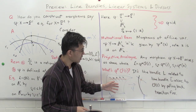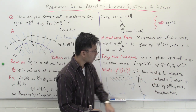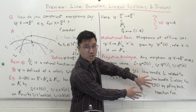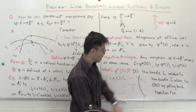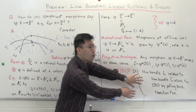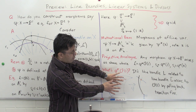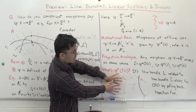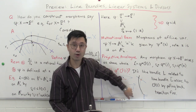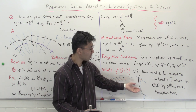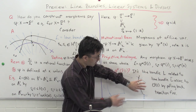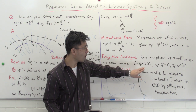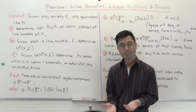For a more formal description: O(1) is given by two open patches with a transition function telling you how to glue two trivial bundles together. Pulling back gives an open cover of X by pulling back those open sets. On those two open sets the bundle is trivial, and the transition function — which is an invertible function on the intersection of the open sets in P1 — pulls back via φ to give the transition function of φ*(O(1)) on X.